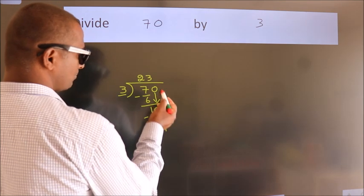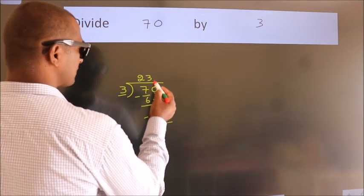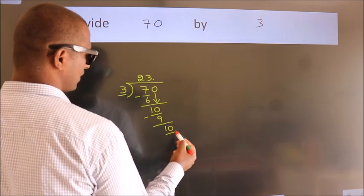After this, no more numbers to bring it down. So, what we do is we put a dot and take 0. So, 10.